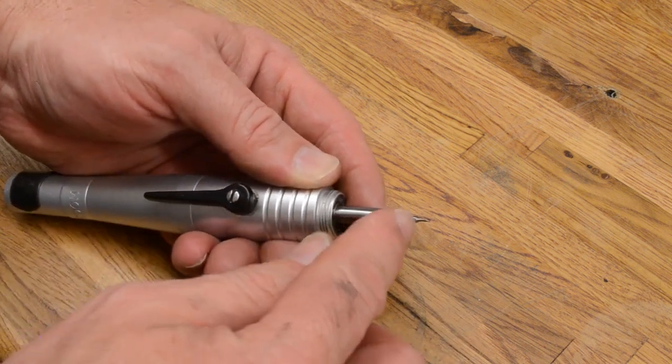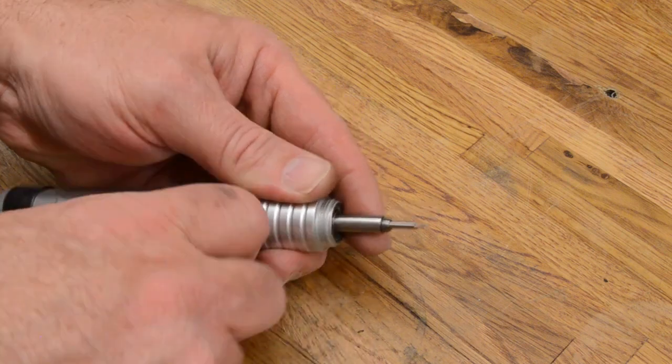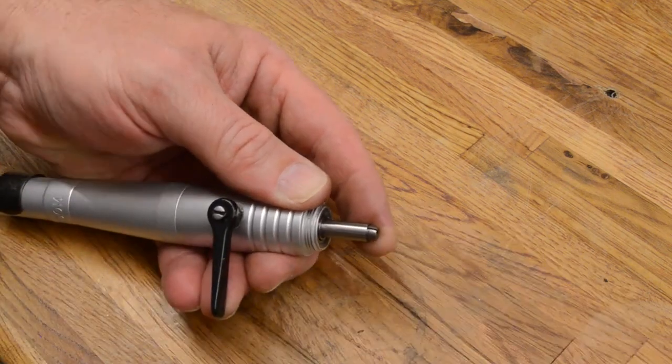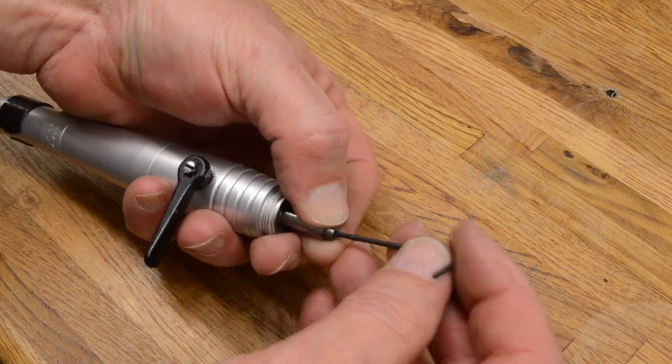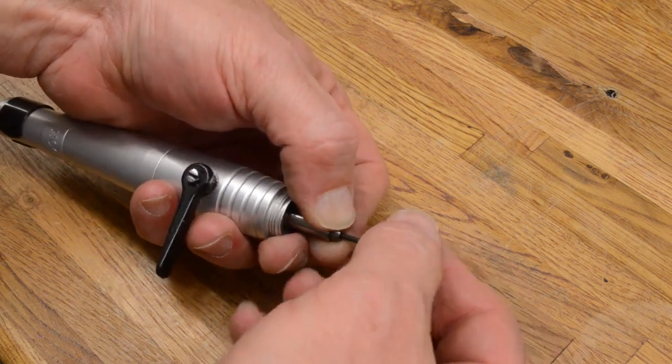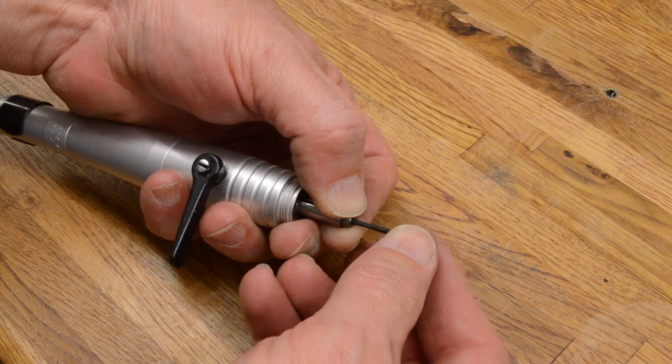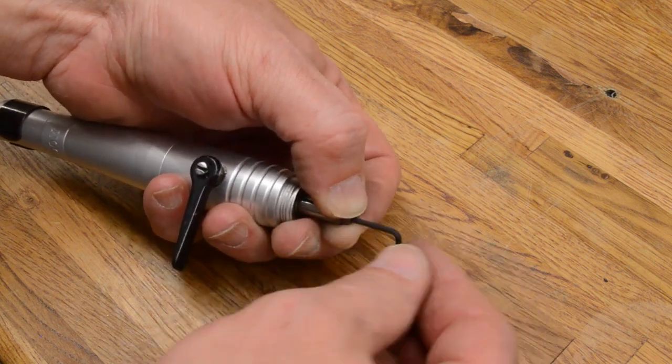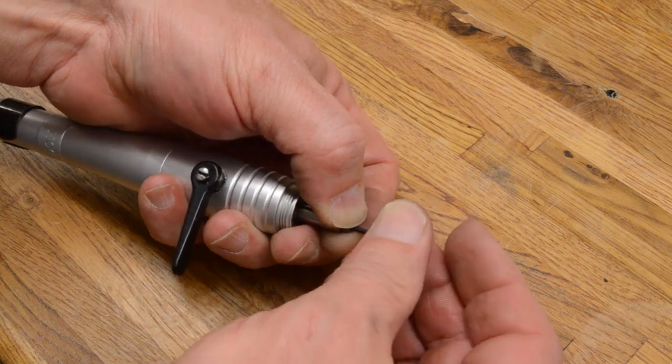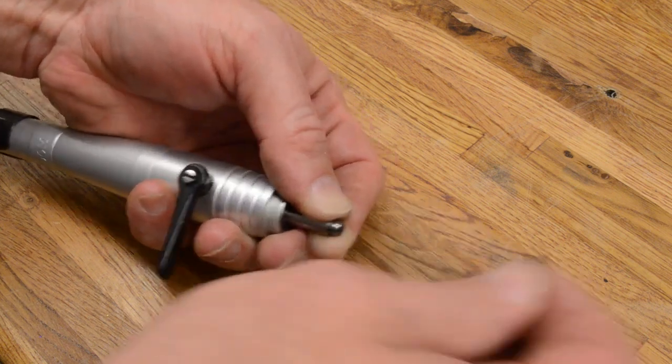Now, since I know that this is where I want to keep it, I'm going to pull my bit back out. Now I am not going to allow the collet to move, just by holding it, and I'm going to stick my Allen wrench in, I'm going to engage the set screw, and I'm going to tighten the set screw down. All right?